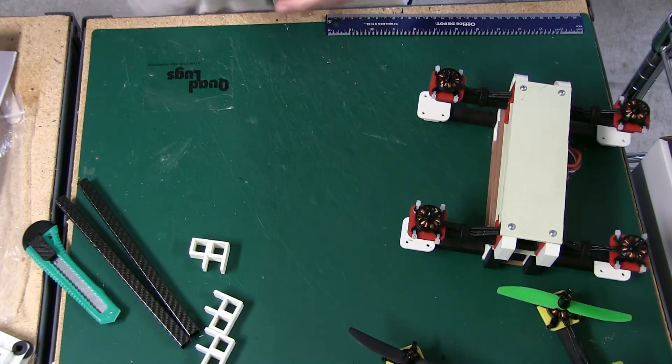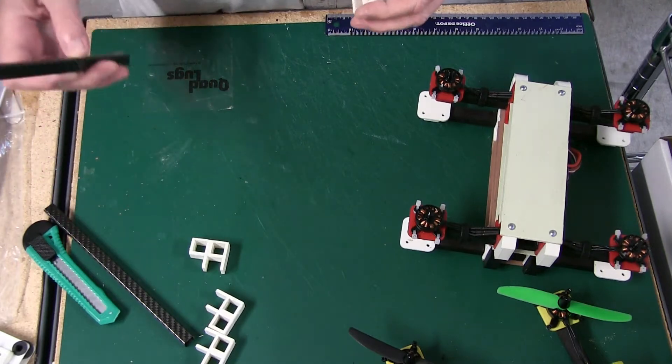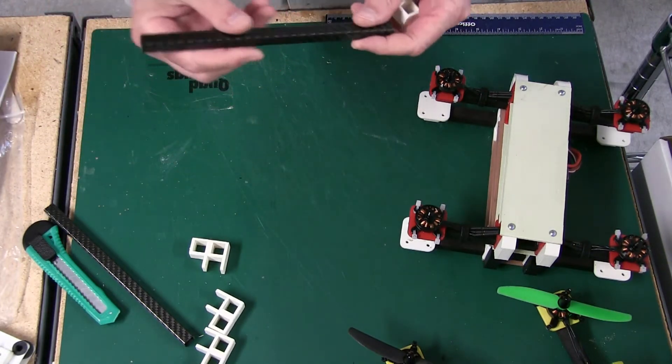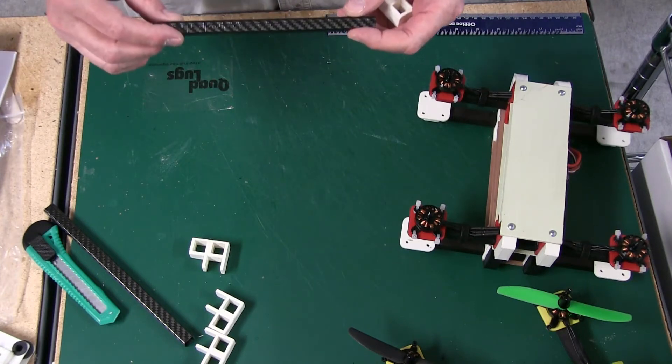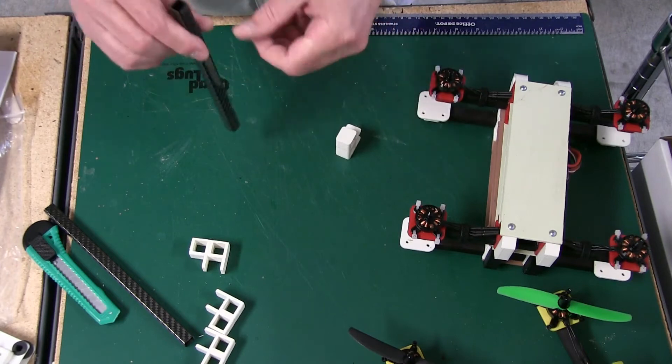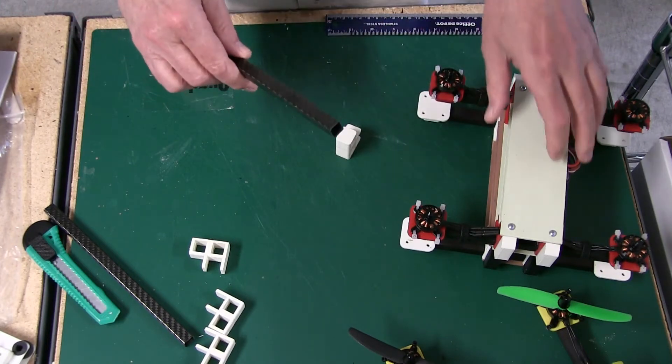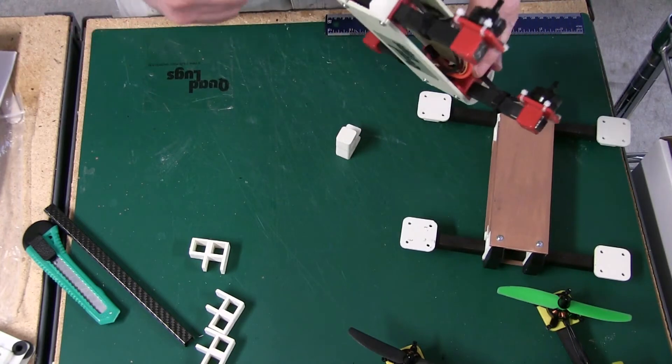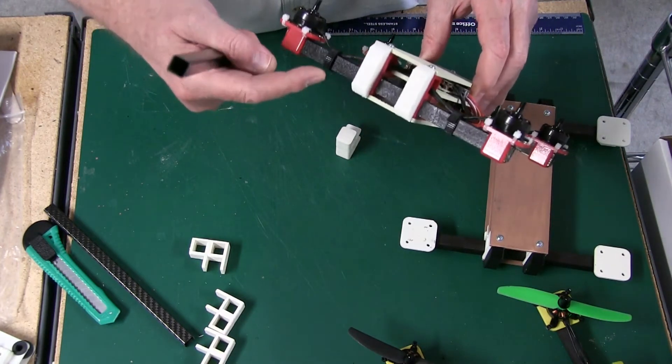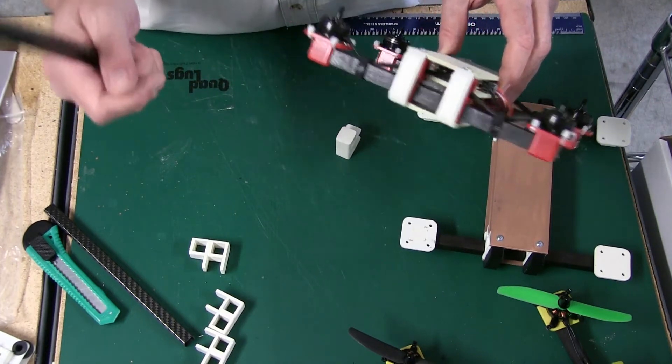Also we're going to be introducing at Joe Nall the carbon series. We've been working with a carbon manufacturer and we have a half-by-half to replace the half-by-half wood now.